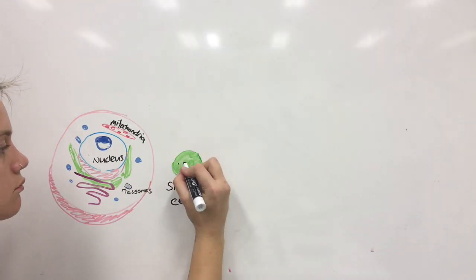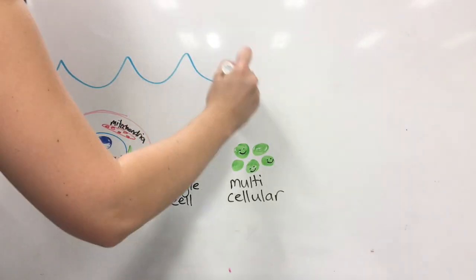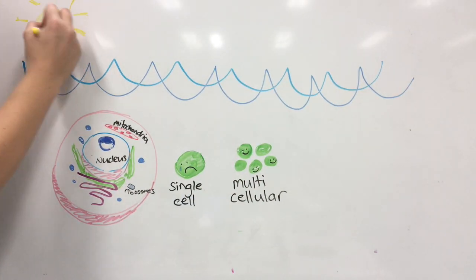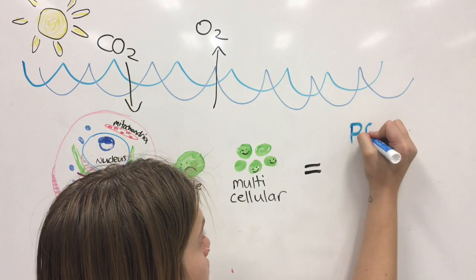First, what is algae? Algae are a very diverse group of generally simple unicellular or multicellular eukaryotic organisms. Most of them are autotrophic, which means that they can harvest carbon dioxide from the atmosphere and convert it to organic matter.